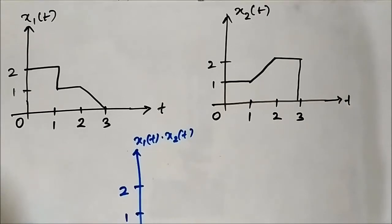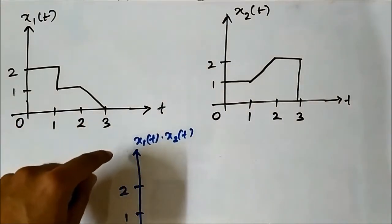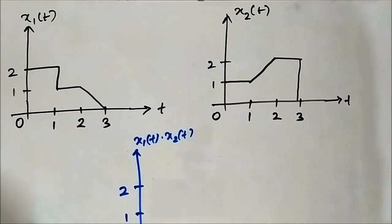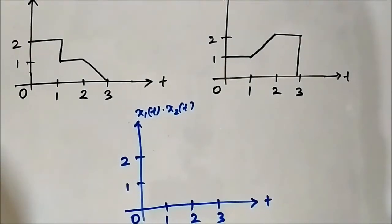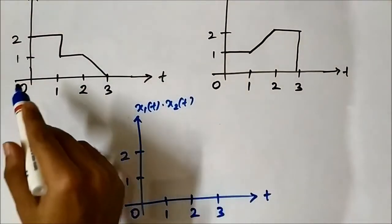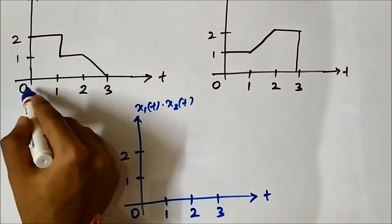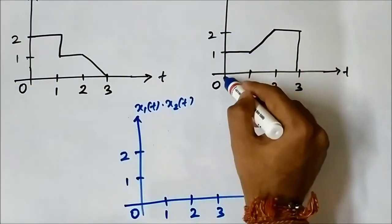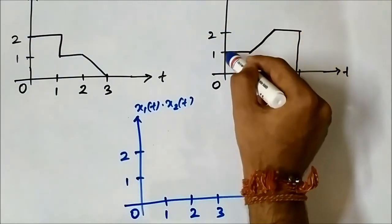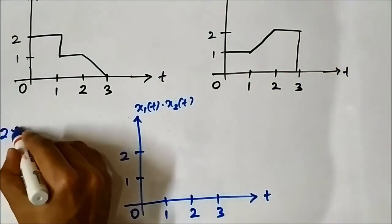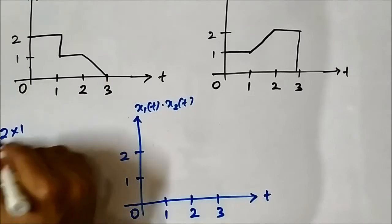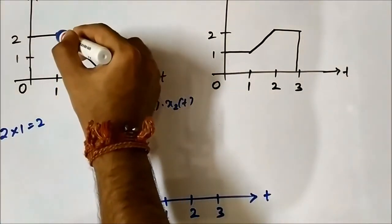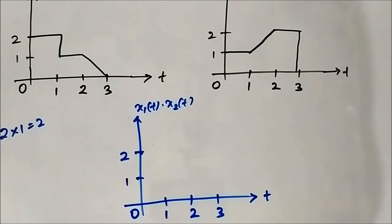As per the definition of signal multiplication, at each time instant we have to multiply the respective amplitude values of the signals. At t equals 0, the amplitude value of x1(t) is 2 and the amplitude value of x2(t) is 1, so 2 into 1 equals 2. So the result at t equals 0 is 2.